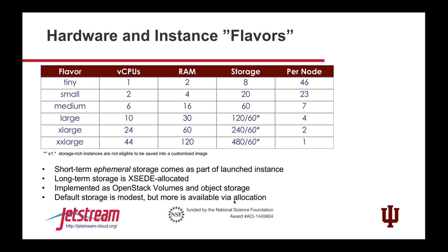Hardware instances and flavors: if you've used commercial services, you've probably run across the term 'flavors' before. We show different sizes of VMs keyed by number of CPUs, and how many we can put on a node. If you have an extra-extra-large flavor instance, you are basically taking an entire node of Jetstream. This lays out how much CPU, RAM, and storage each flavor provides.